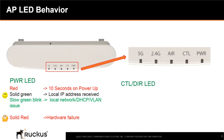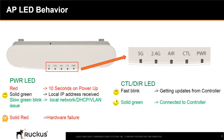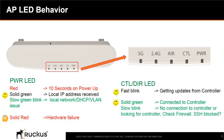The Control or DIR LED provides connection status information between the AP and the controller. Once the power LED turns solid green, the Control or DIR LED will blink fast, indicating the AP is getting updates from the cloud controller. Once a connection has been established, the Control or DIR LED will turn solid green. In the event there is no connection to the internet, the LED will blink slowly. If this happens, check for firewall, DNS resolution, or whether SSH or HTTPS protocols are blocked at your venue. Within 5 minutes, both the power and Control or DIR LED should be solid green, meaning the AP is successfully communicating to the cloud server.